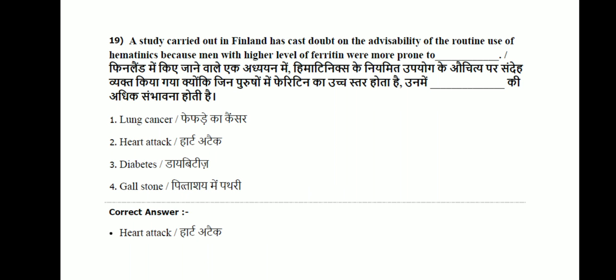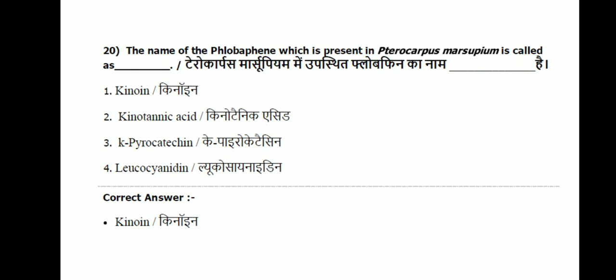Question 19: a study carried out in Finland cast doubt on the advisability of routine use of hematinic supplements because men with a higher level of ferritin were more prone to which condition? Options are lung cancer, heart attack, diabetes, or gallstone. The correct answer is heart attack. The Finland study showed that routine use of hematinic supplements caused heart attack in men with higher ferritin levels.